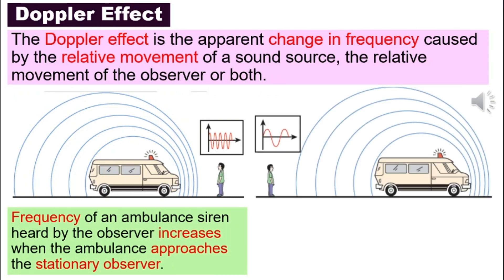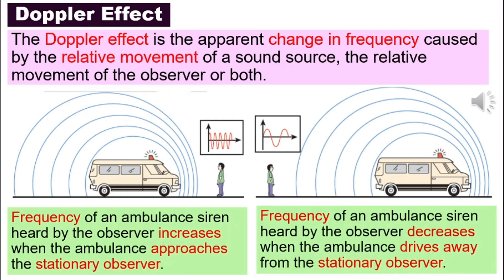But when the ambulance drives past the boy and moves further away, the sound waves behind the ambulance are further away from each other, meaning they are of a lower frequency. So the frequency of the ambulance siren heard by the boy will decrease as the ambulance drives further away from him.